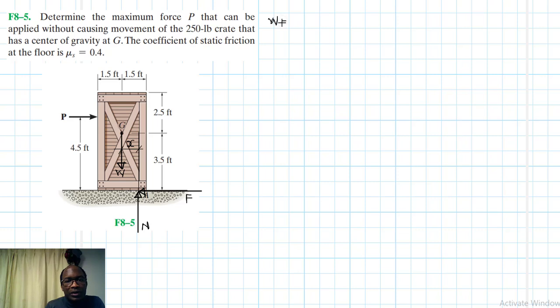So we have X, we have F, and then we have N, and then we have W. Of course, W is already given, is equal to 250 pounds. The number of unknowns, how many are they? They are equal to 4, and these are P, X, N, and F. And the number of equations of equilibrium are equal to 3. And because the unknowns are more than the number of equations of equilibrium, we are going to be forced to use the friction equation.